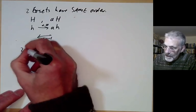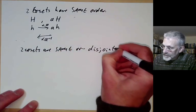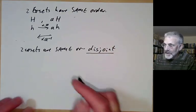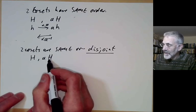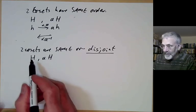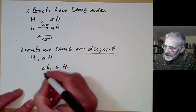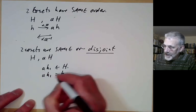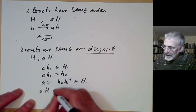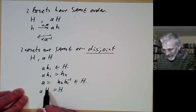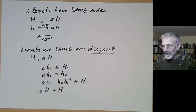We can also see that two cosets are either the same or disjoint. To show that cosets H and aH are either the same or disjoint, suppose they've got some element in common. Suppose aH1 is in H, meaning aH1 equals H2 for some H2 in H, so a equals H2 times H1 to the minus 1, which is also in H. This means aH equals H, because you're just multiplying elements of H by themselves.